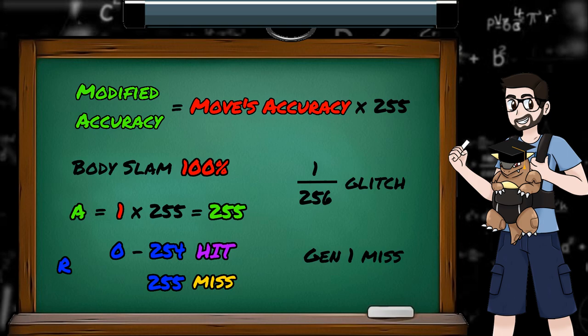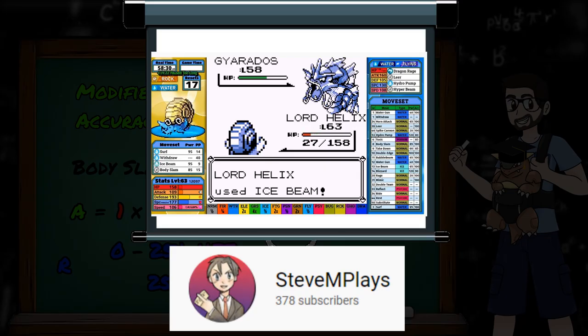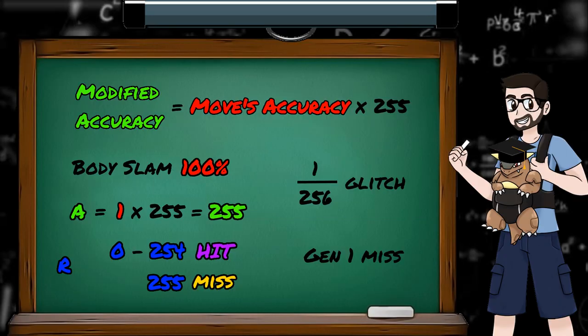Rather than mindlessly resetting until I get a Gen 1 miss myself, here's one that Steve M. Plays has encountered, missing his 100% accurate Ice Beam during an Omanyte solo challenge. This Gen 1 quirk finds itself in a few of the calculations we'll be looking into in this series, including guaranteed critical hits which we covered last time. The 1 in 256 glitch is why a Karate Chopping Primeape is only 99.6% likely to land a critical hit.